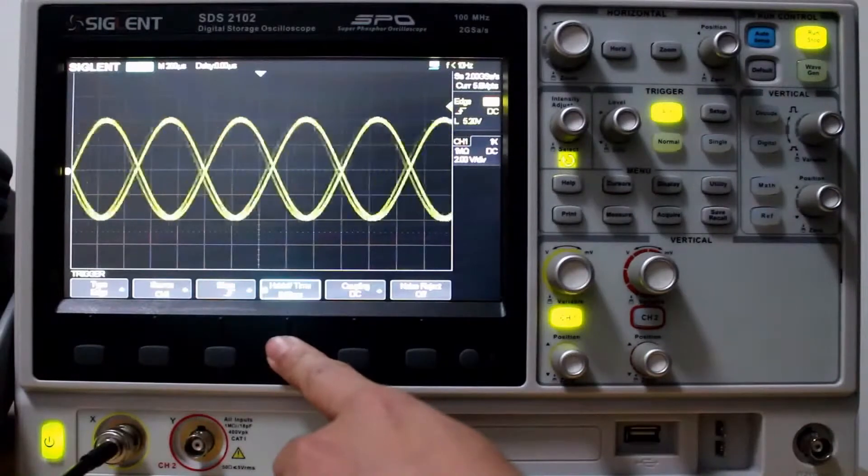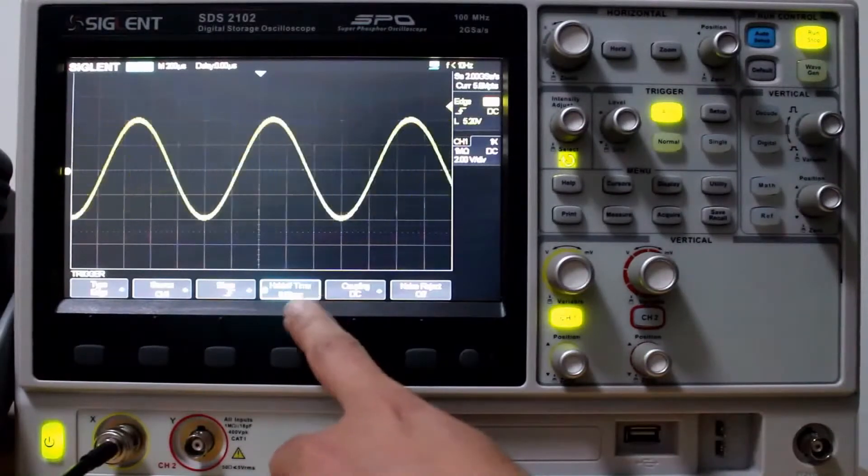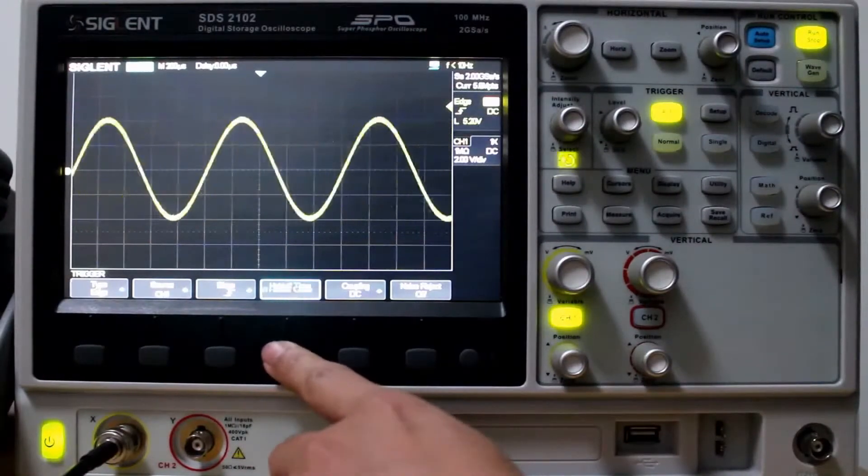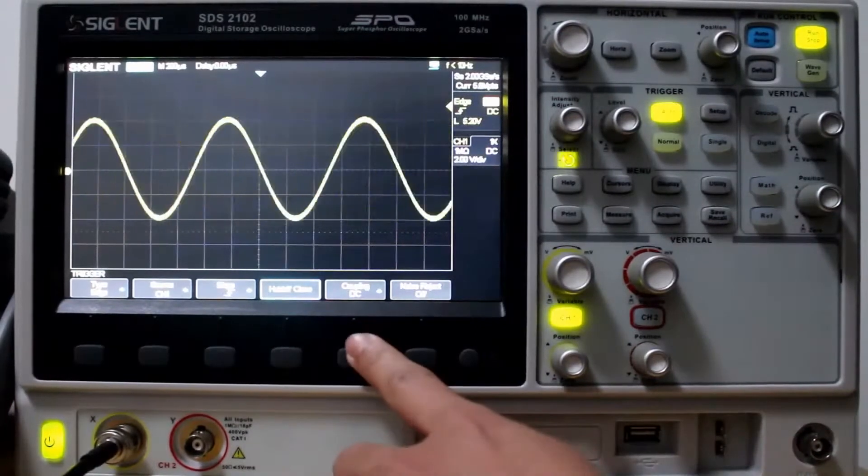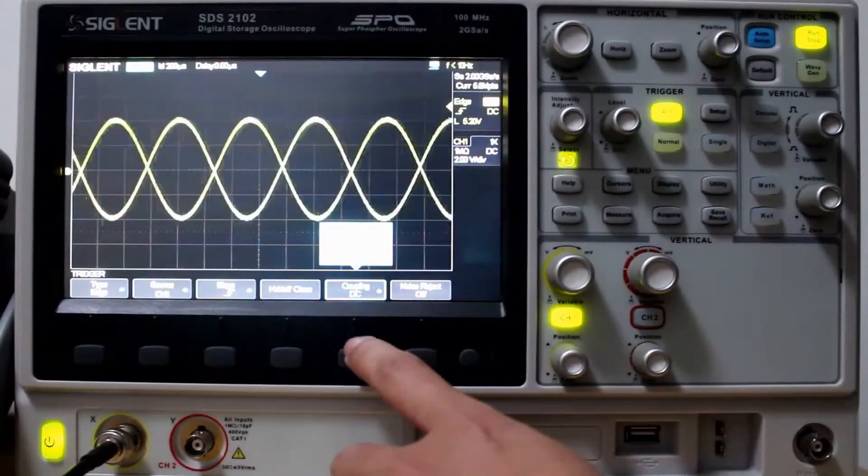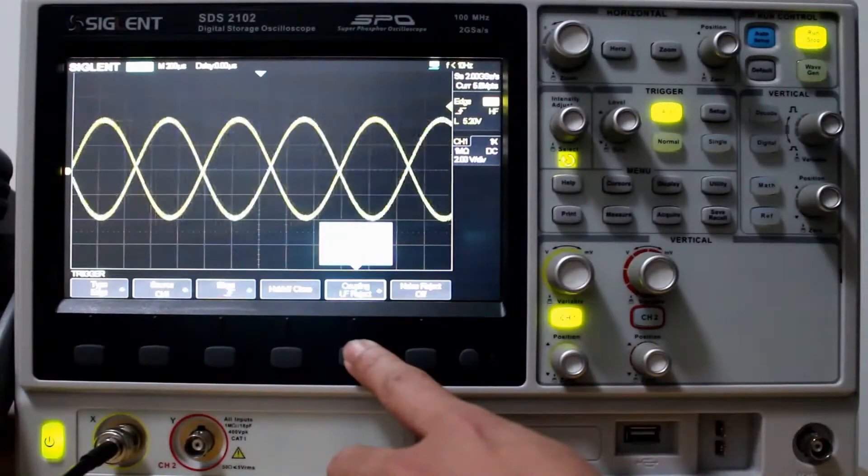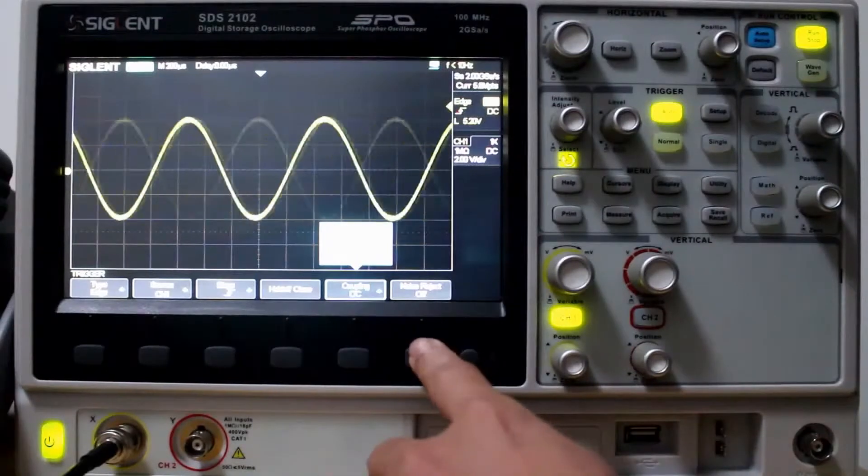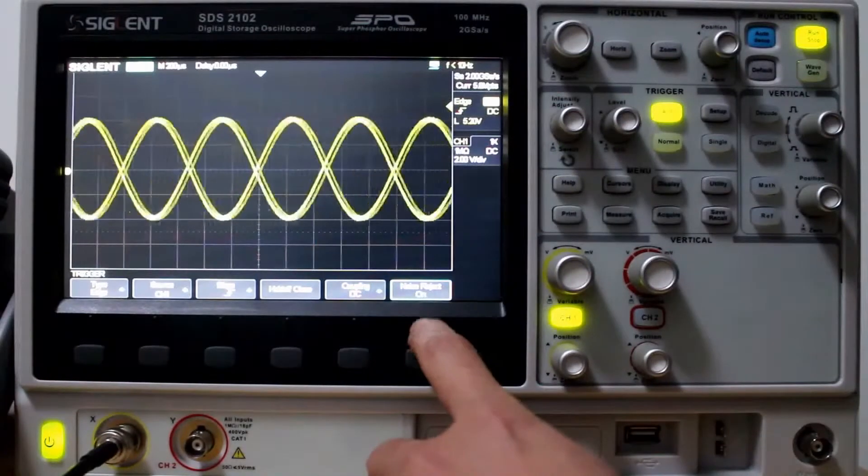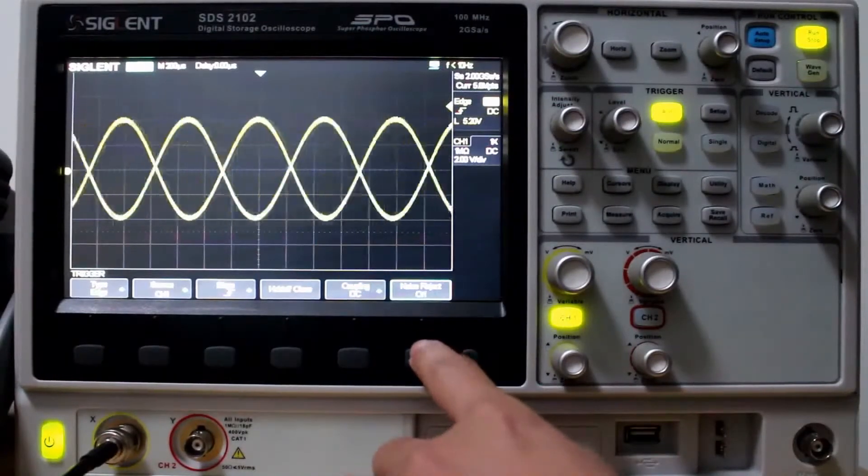We can set the Hold Off, which is pretty much the delay between triggers. So we turn that off. Coupling. We can have DC, AC. We can have Low Frequency Reject, or High Frequency Reject. We'll set it to DC. And there's also a Noise Reject option on or off.